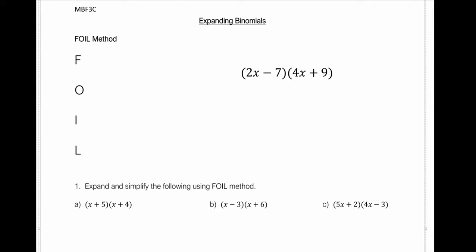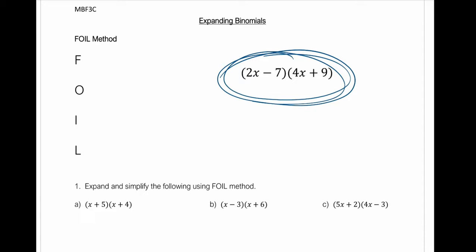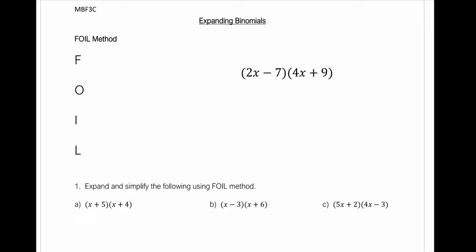In today's note we are going to look at expanding binomials. A binomial basically just means two terms, so what we're doing is multiplying two terms by two terms. An example is (2x − 7)(4x + 9) — two terms in brackets multiplied by another two terms in brackets. This should look slightly familiar because we've looked at binomials before in factored form. In the note we're going to look at two methods of expanding binomials, and you're free to use whichever method you prefer.